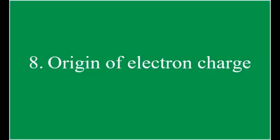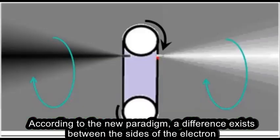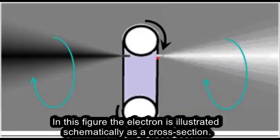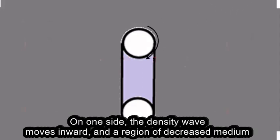8. Origin of Electron Charge. According to the new paradigm, a difference exists between the sides of the electron. In this figure the electron is illustrated schematically as a cross-section. On one side, the density wave moves inward,